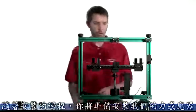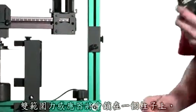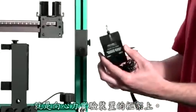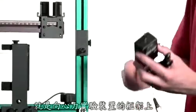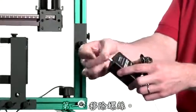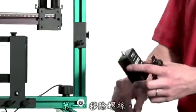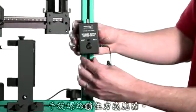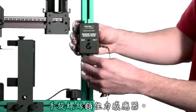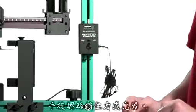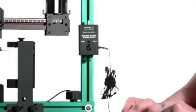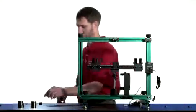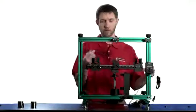With that installed, we're ready to put on our force sensor. The dual range force sensor attaches to a post on the frame of the centripetal force apparatus. First, remove the screw, then slide the force sensor onto the post, and use the thumb screw on the force sensor to orient the force sensor.